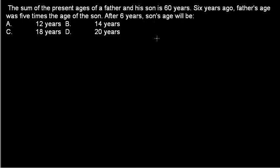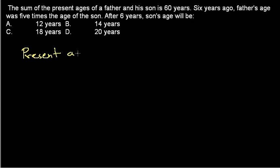It sounds puzzling, but let's find it systematically. First thing first, we need to assume the age of the father or son. We always assume the age of the person who is younger, so let's assume the present age of the son is x years.